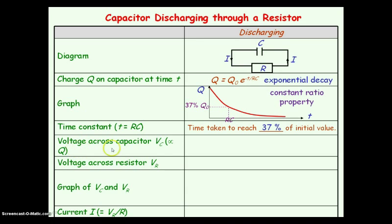Now we are going to look at the voltage across the capacitor. From previous theory you should appreciate that voltage is directly proportional to the charge stored, because of the equation Q equals CV, where capacitance is a constant. So the charge stored on the capacitor is directly proportional to the voltage across it. Therefore during discharging, since the charge stored follows an exponential decay, the voltage across the capacitor will also follow an exponential decay because of that directly proportional relationship.